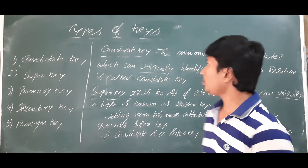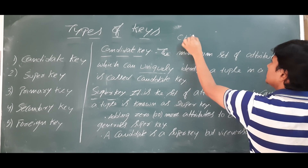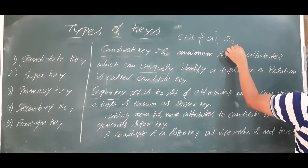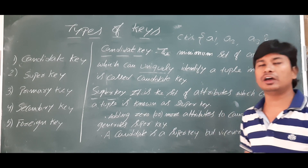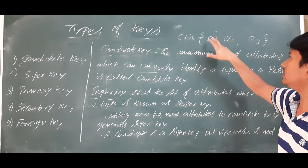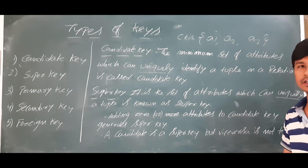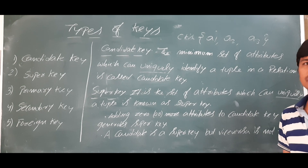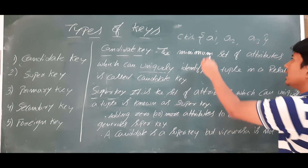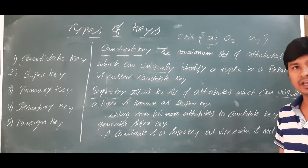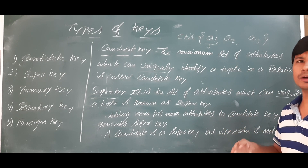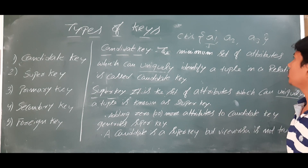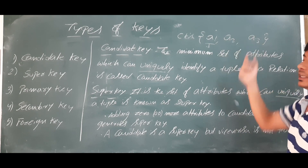Now let's discuss the primary key. Suppose you have a set of candidate keys for a relation R — let's say A1, A2, and A3 are all candidate keys. In our car example, vehicle registration number, engine number, and chassis number are each candidate keys. Among the set of candidate keys, one will act as the primary key, which can uniquely identify any tuple in the relation.